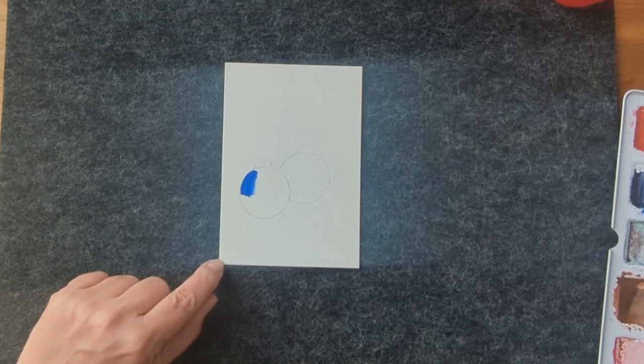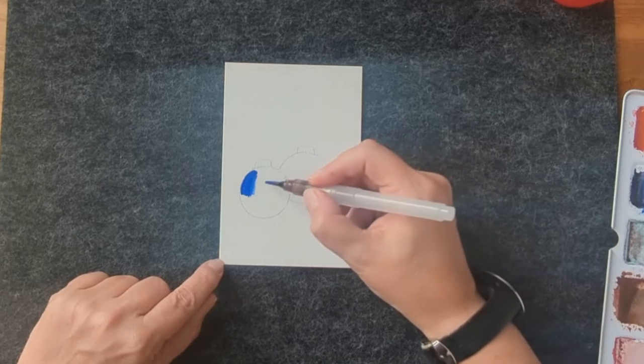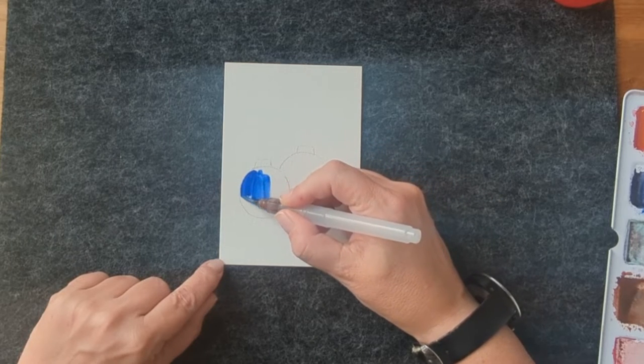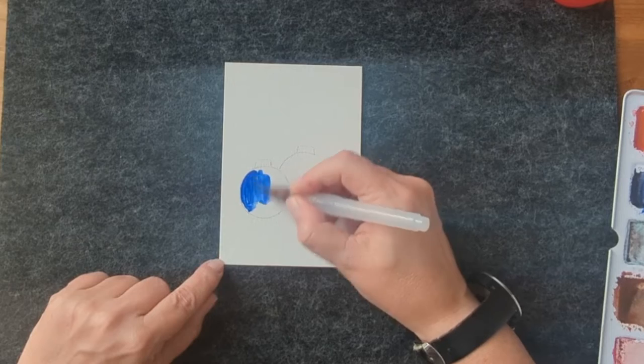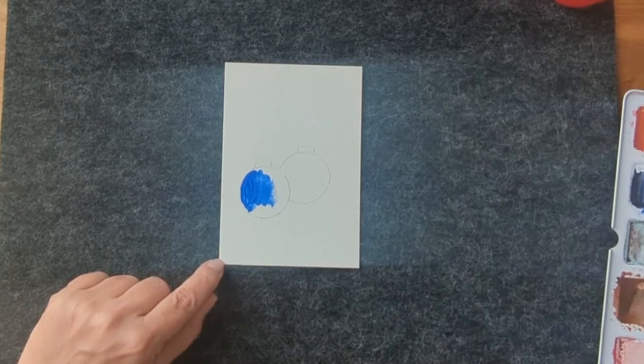For the first bauble I used ultramarine blue. I don't know if bauble is rightly pronounced but well the first circle is in blue.